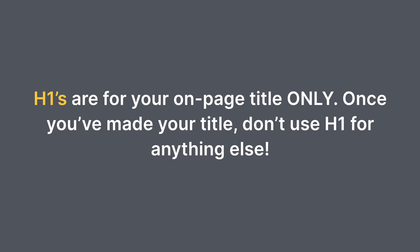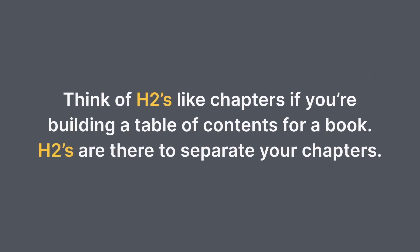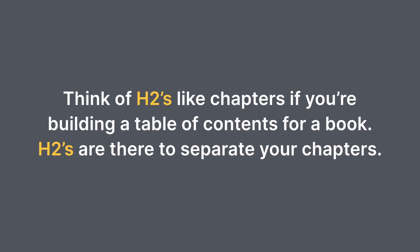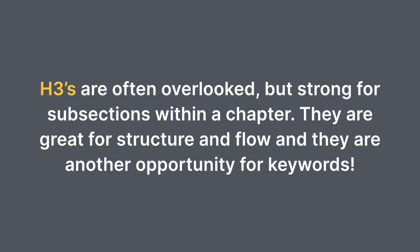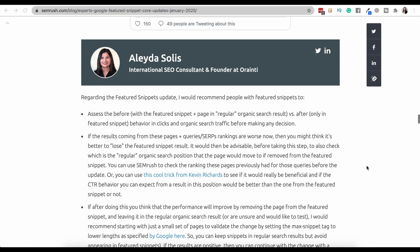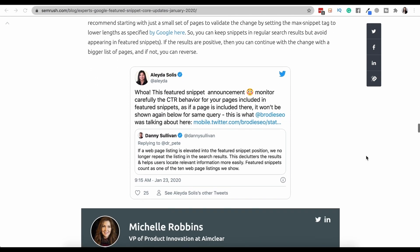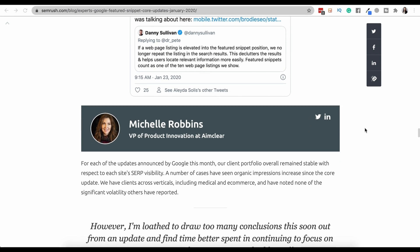To avoid that, here are a few tips. H1s are for your on-page title only — once you've made your title, don't use H1 for anything else. Think of H2s like chapters if you're building a table of contents for a book. H3s are often overlooked but are strong for subsections within a chapter — great for structure, flow, and keywords. Remember, H1, H2, and H3 elements are not design-focused. Use your CMS style sheet tools or work with your dev team for design elements.